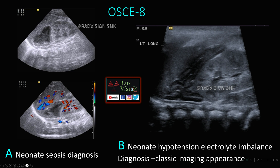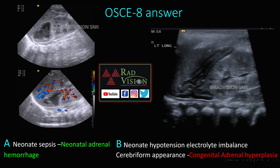Next, OSCE 8. There are two cases: A — a neonatal sepsis case, and B — a neonatal hypotension with electrolyte imbalance case. In the neonatal sepsis case, you can see a hypoechoic mass noted in the superior pole location of the kidney — this is classical of neonatal adrenal hemorrhage, which commonly occurs in preterm infants. In the neonatal hypotension case, the whole adrenal is enlarged with a cerebriform type of appearance — the adrenal convolutions resemble cerebral parenchyma with gray and white matter. This cerebriform appearance is seen in congenital adrenal hyperplasia.